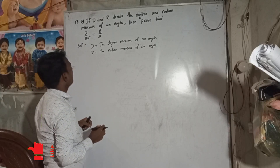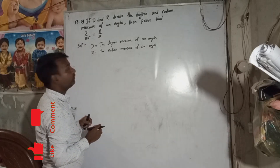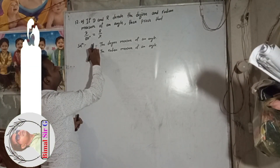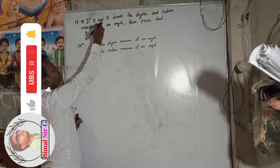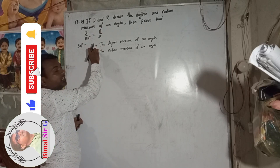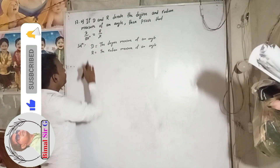Now, what we will do here? The condition is that D degree is equal to R radian.